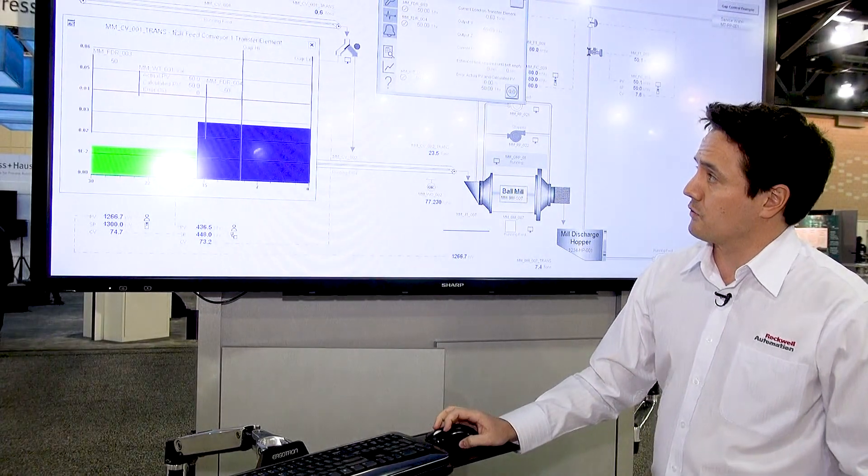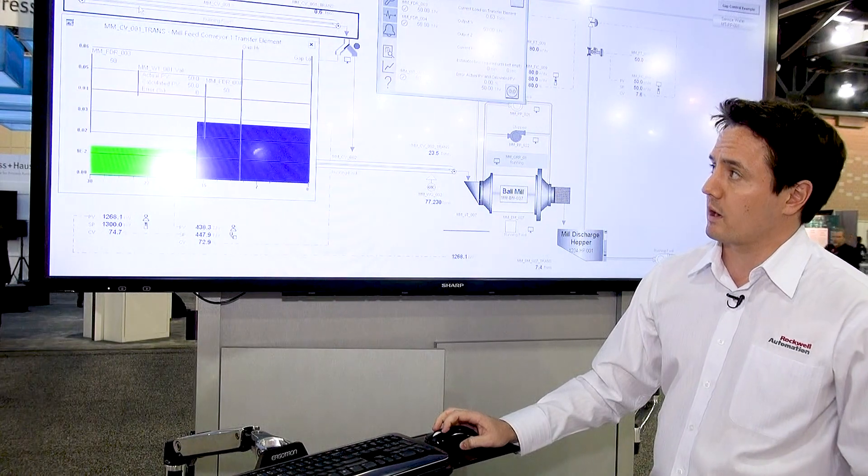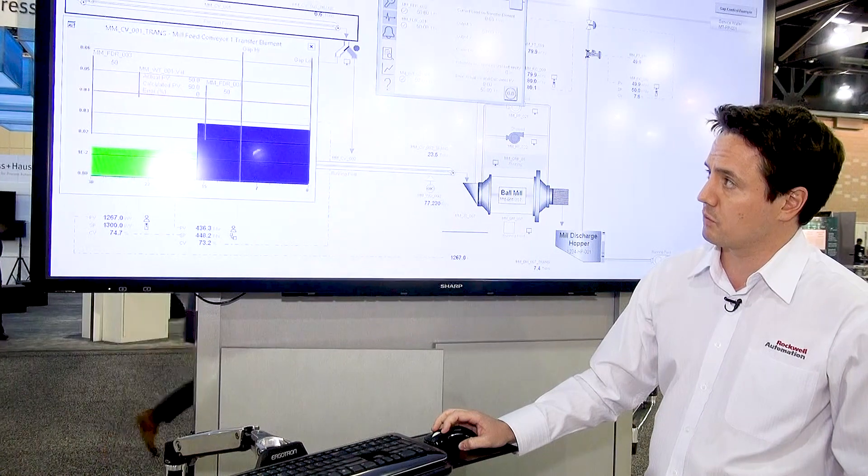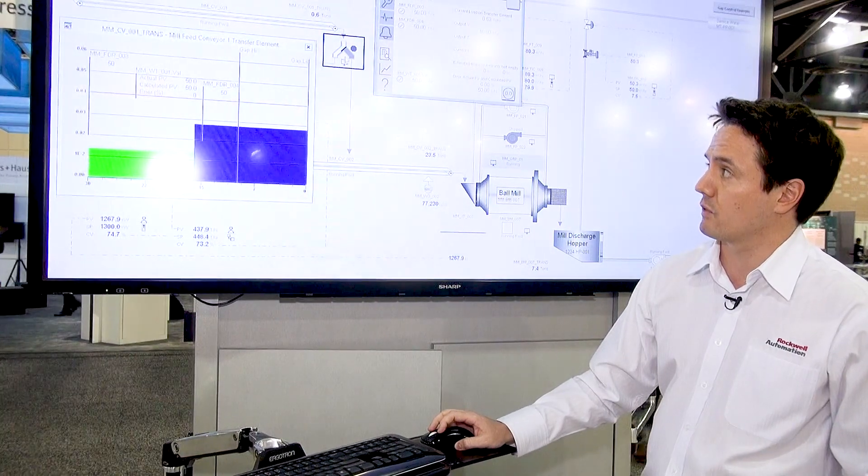So I'm going to run through a quick example of it. What we've got is our transfer element is used to track product versus time. In this example I've got a conveyor belt and we're tracking product as it moves from the tail towards the head of the conveyor.